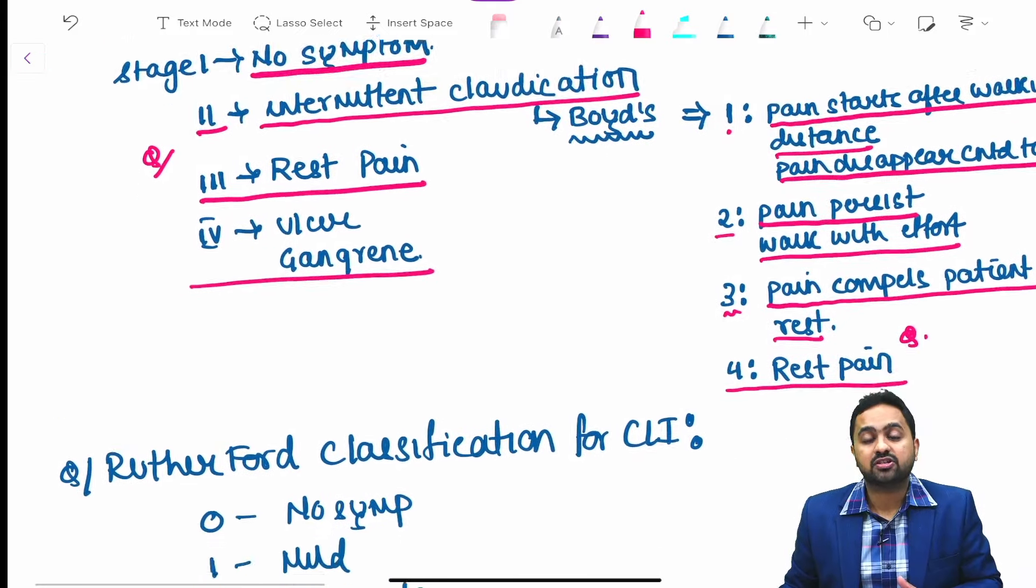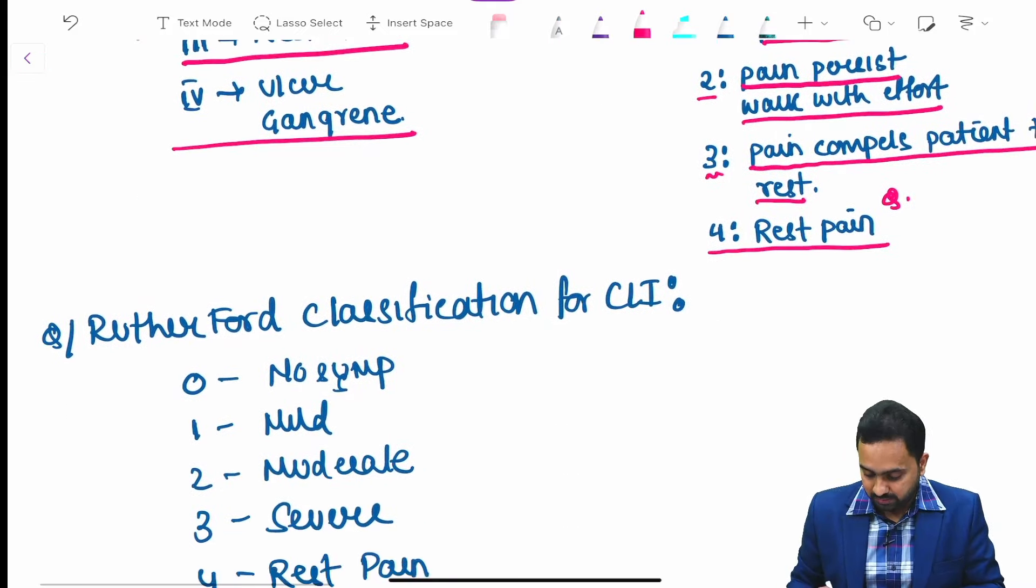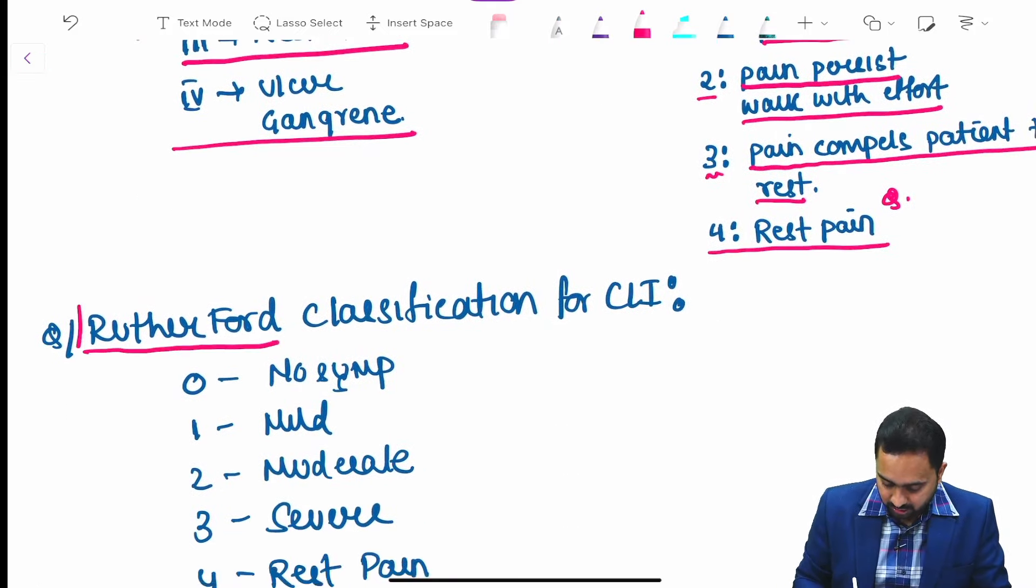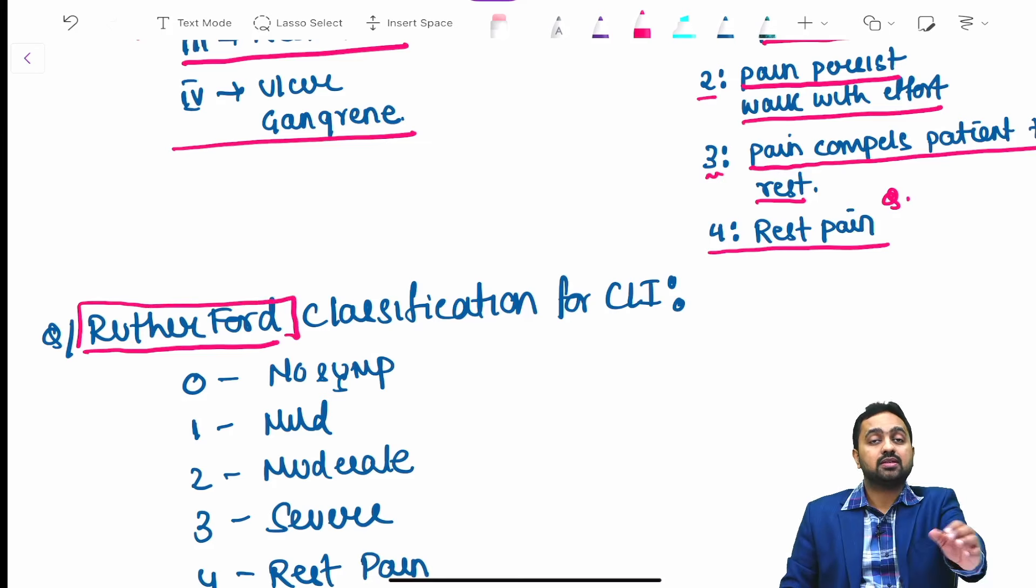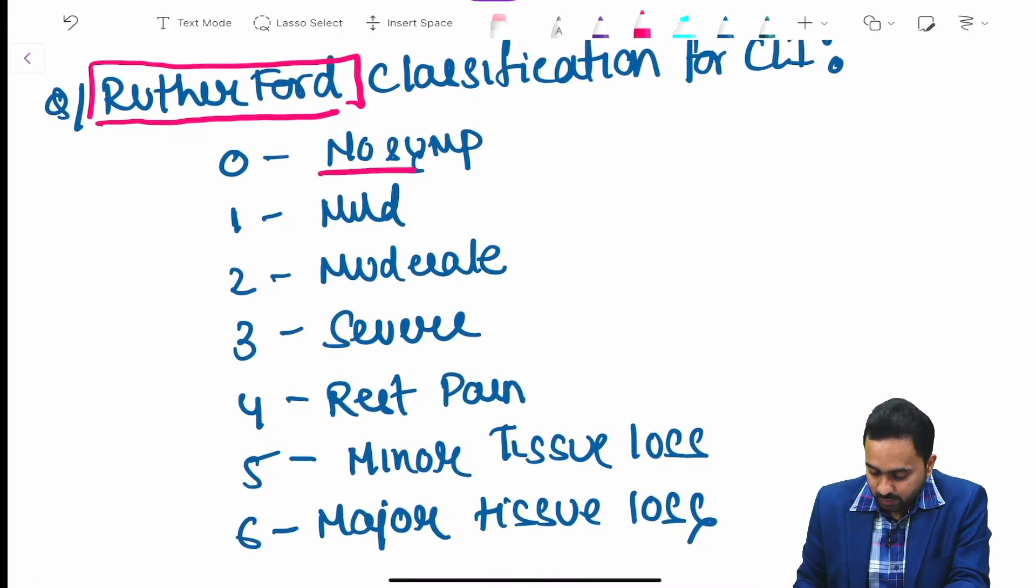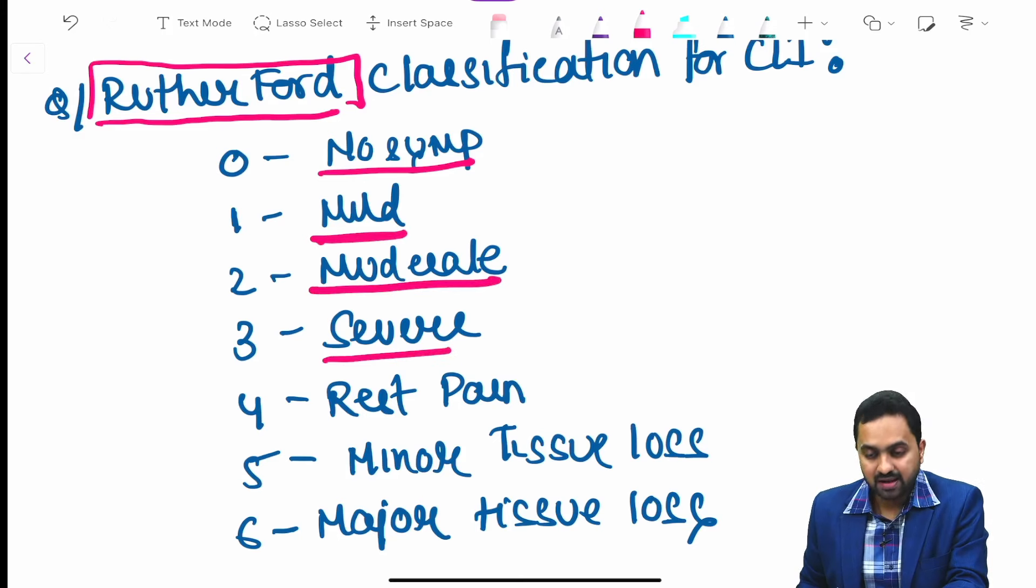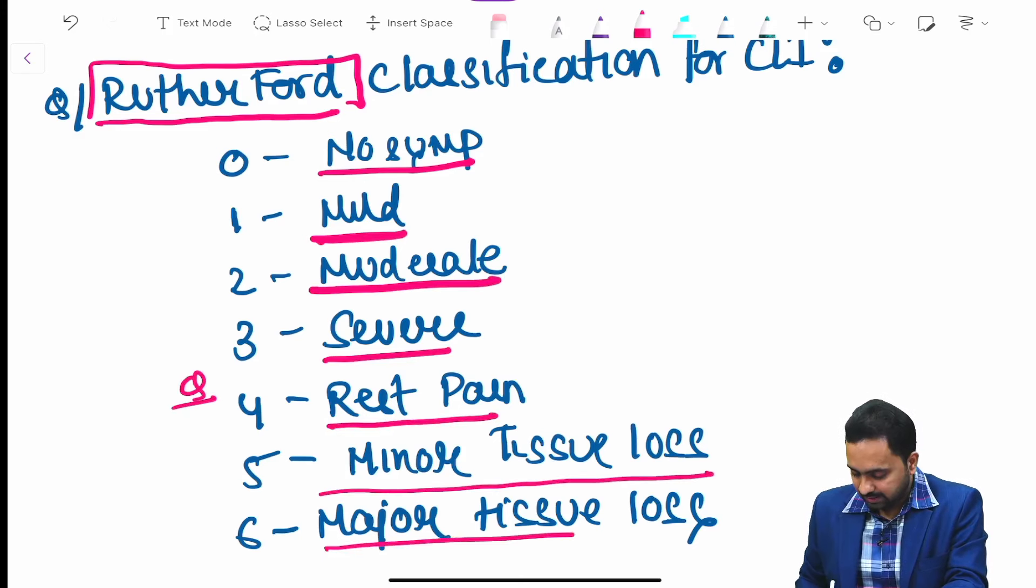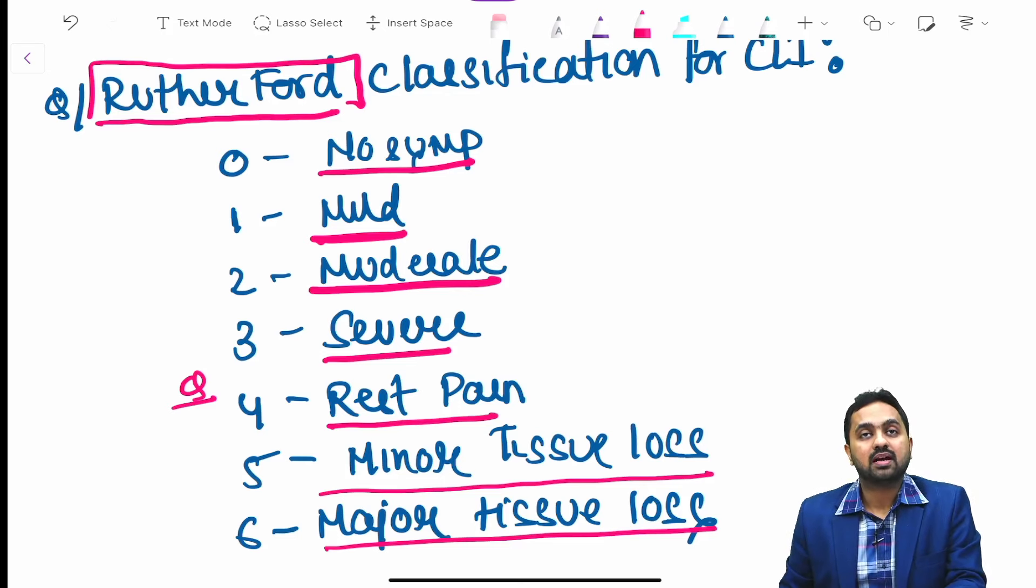Another classification for chronic limb ischemia is the Rutherford classification. We shall also look at Rutherford classification for acute limb ischemia subsequently. We have 0 as no symptoms, 1 as mild symptom, 2 as moderate symptoms, 3 as severe symptom, 4 as rest pain, 5 as minor tissue loss and 6 as major tissue loss.